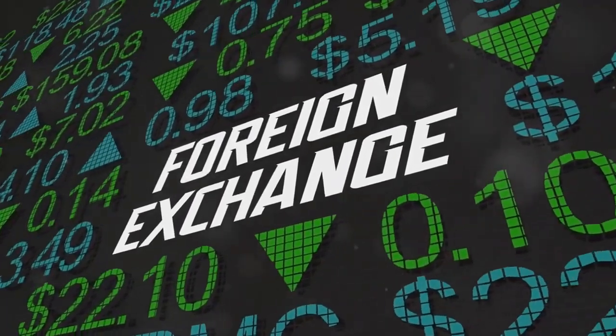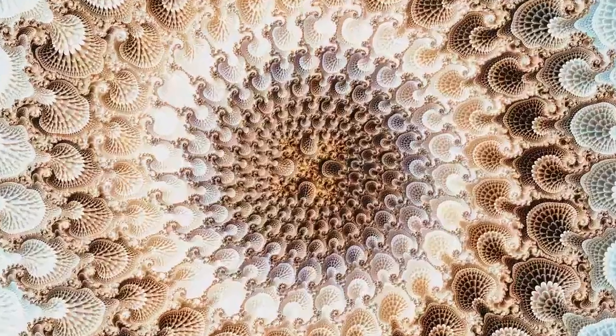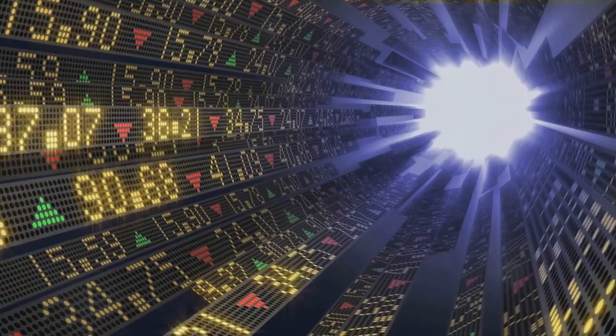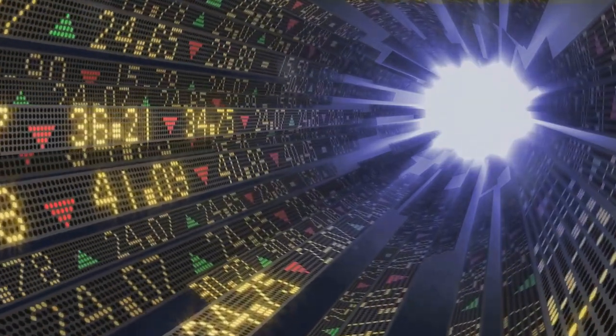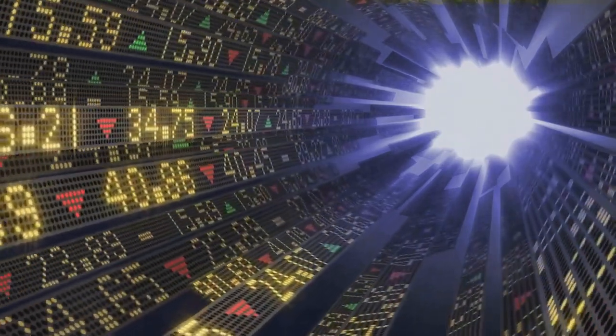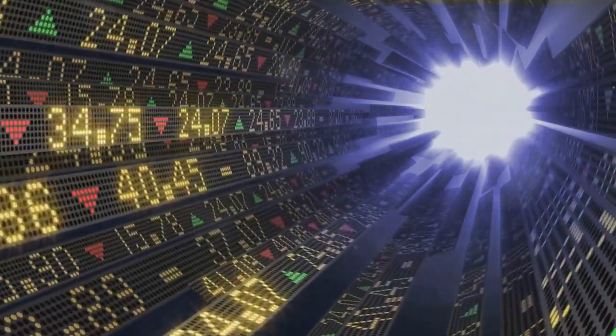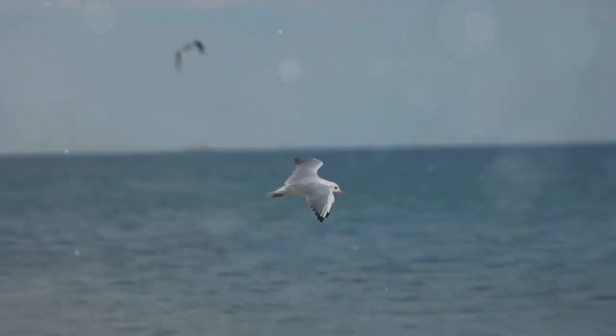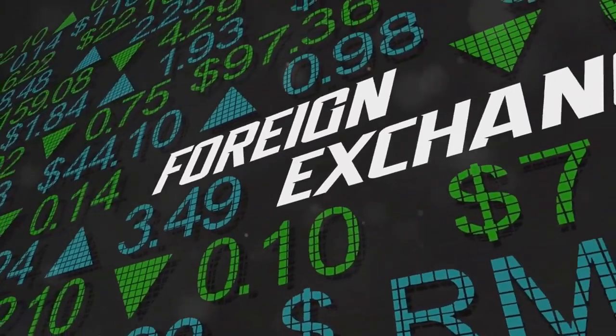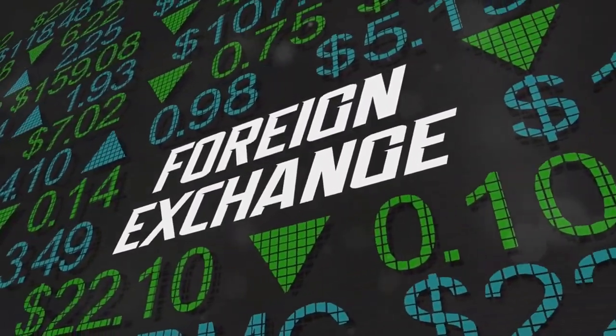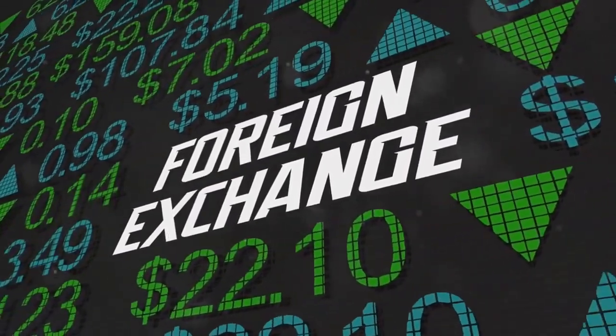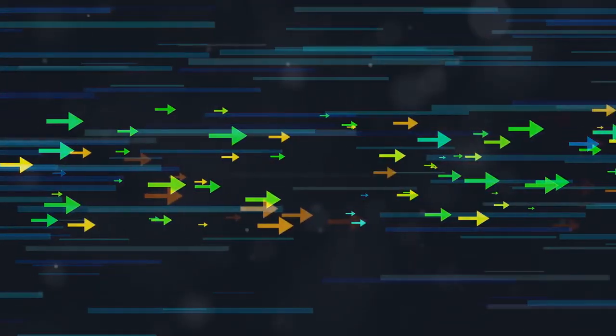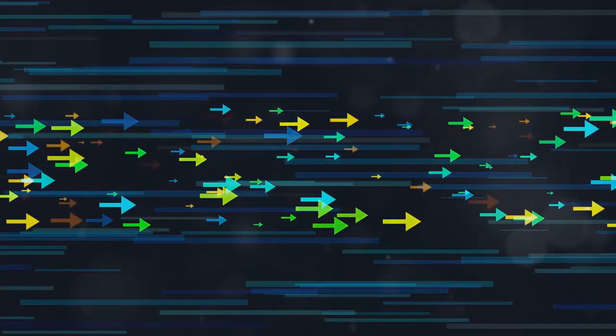Enter the fascinating world of Levy flights. Named after Paul Levy, these patterns describe a different kind of random walk, one that better reflects the occasional wild swings observed in financial markets. Imagine an albatross soaring over the ocean. It flies for long stretches in a straight line, then suddenly makes a sharp turn, covering a large distance in a short amount of time. These abrupt changes in direction are characteristic of Levy flights.